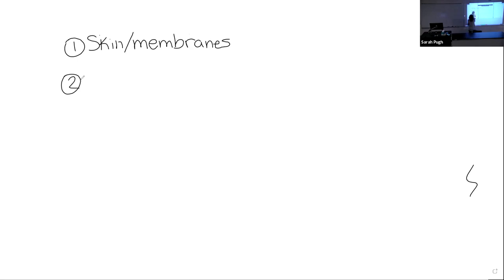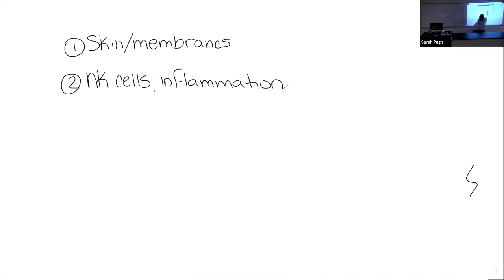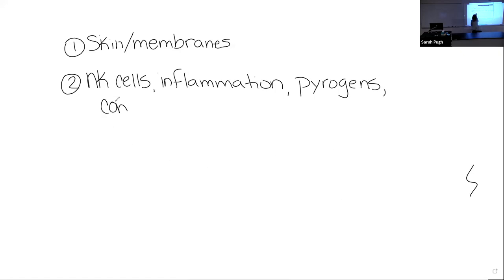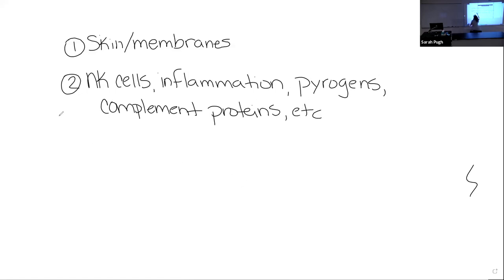Our second line of defense is also part of our innate defenses and includes a whole host of things — anything from natural killer cells, to inflammation, to pyrogens, to complement proteins. We have a whole host of things; these are just a few. Again, remember these are innate, meaning we are born with them.